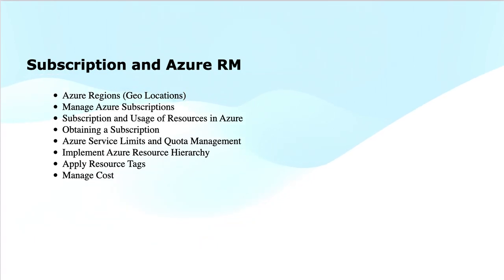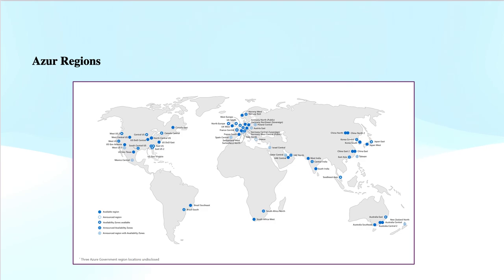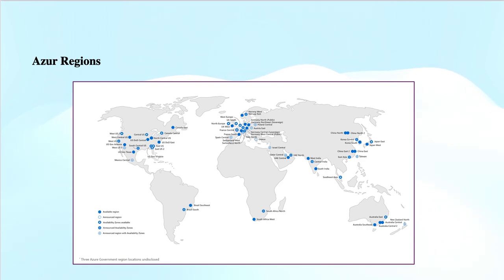Talking about Azure regions: these are geolocations, and Microsoft has 60 plus regions across the globe, in six different geographies of the world. In Antarctica we don't have a region, but in the remaining six geographies — North America, South America, Africa, Asia Pacific, UK, Europe, and Australia — you will find Microsoft data centers. There are 60 plus regions worldwide, representing 140 countries.